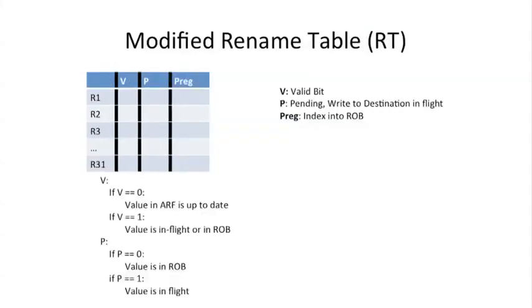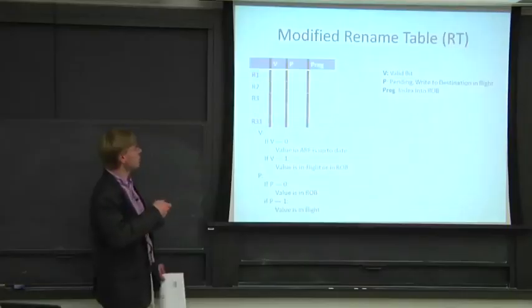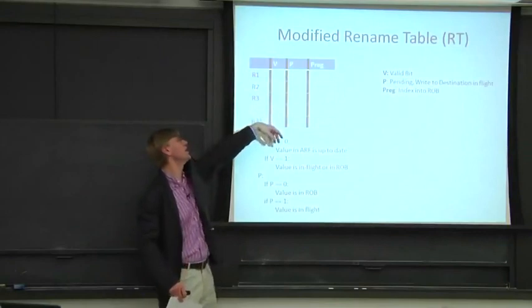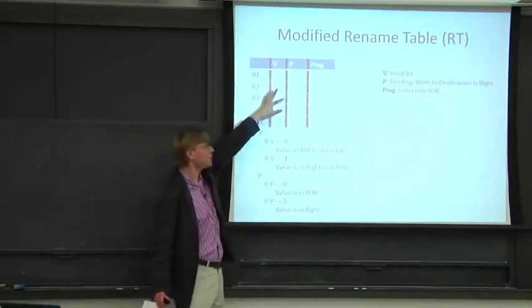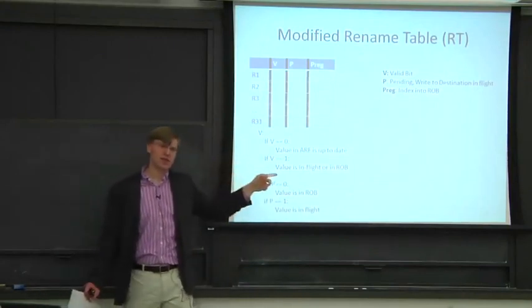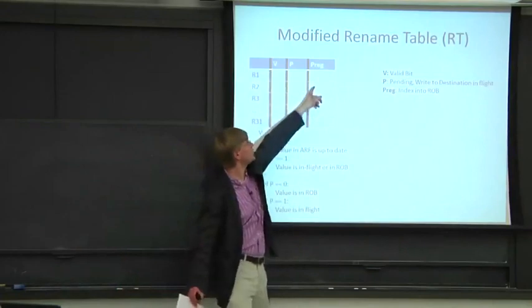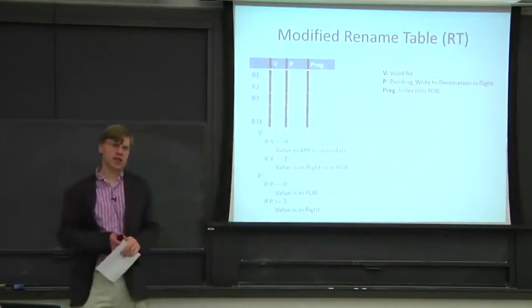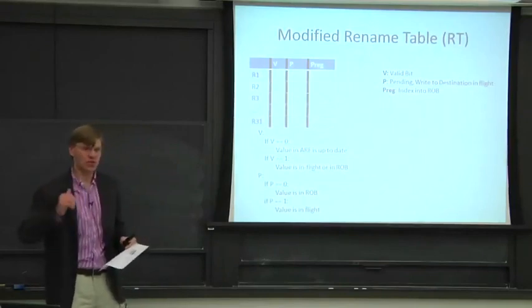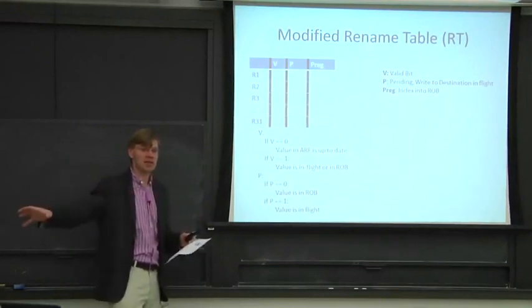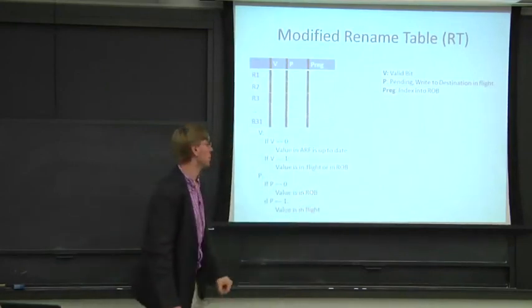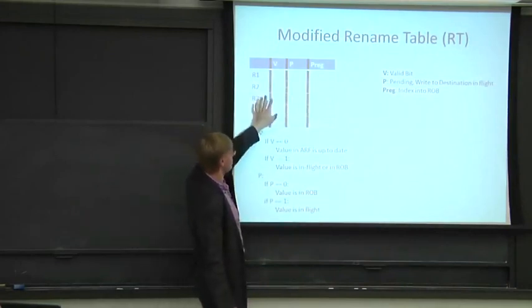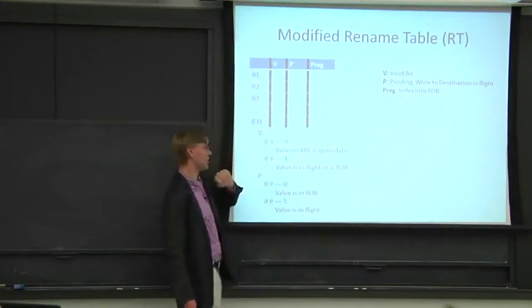The rename table also changes a little bit. It's still indexed by architectural register. It tells us where to go look for a value. There are a couple of different places: it's going to tell us either it's in flight and give the identifier into the reorder buffer — telling us where to get the value once the instruction finishes but maybe hasn't committed yet — or the most up-to-date value is actually in the architectural register file and we need to go look there.